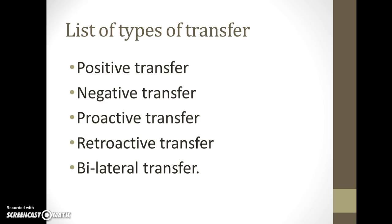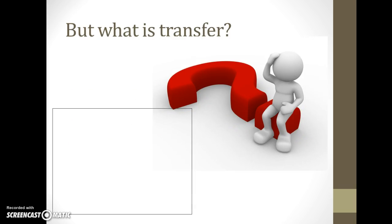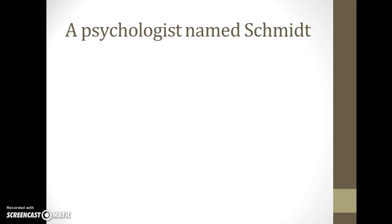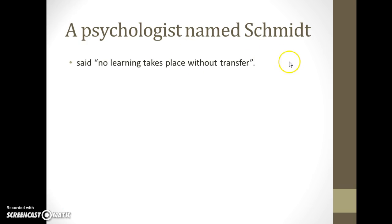So again pause it and see what you think transfer actually is. Transfer is the effect or the influence that one skill has on the learning and performance of another skill. We say that it's not directional — it doesn't say positive or negative, it just says that it has an effect, and that's a very important point to note. The psychologist Schmidt said that no learning takes place without transfer — a really good sentence to put in an exam answer to show the examiner you've got a breadth of knowledge.